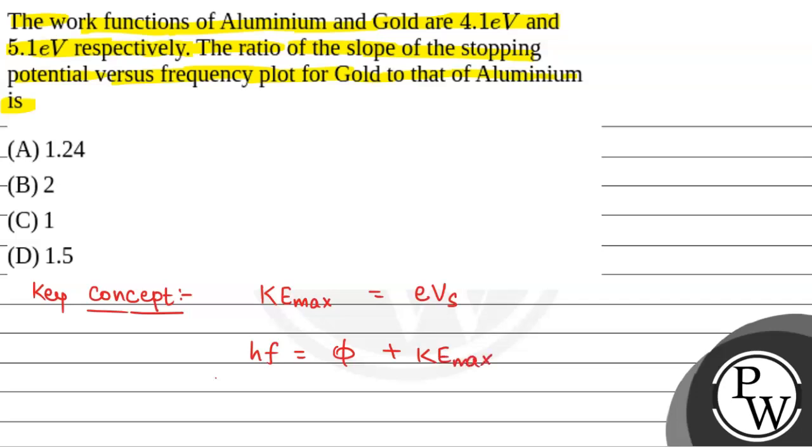So we have hf is equal to phi plus e into Vs, or e into Vs is equal to hf minus phi, or Vs is equal to h by e into f minus phi by e.